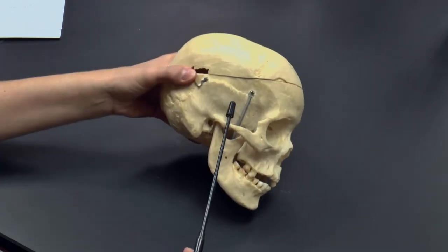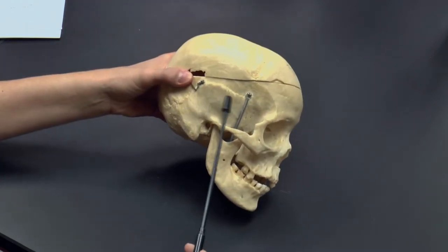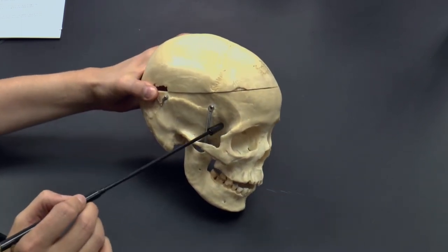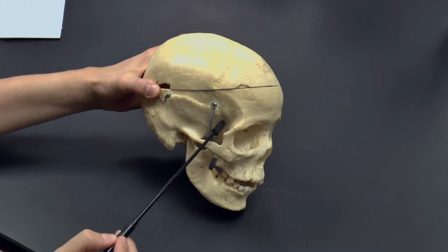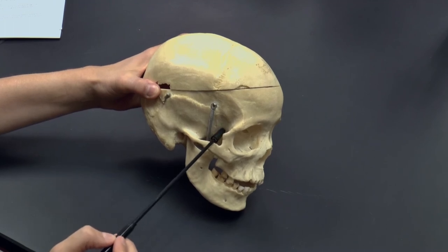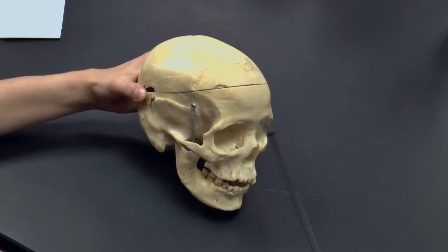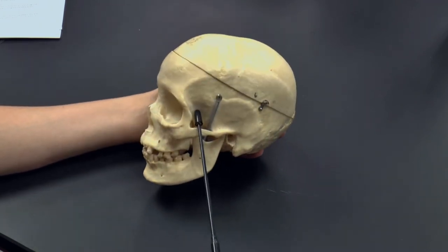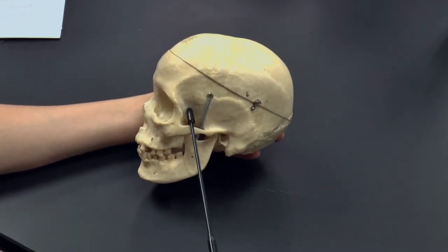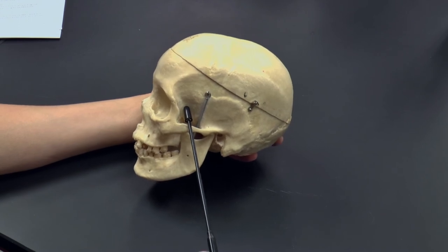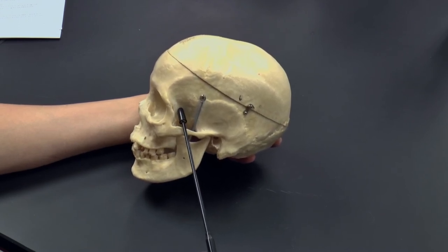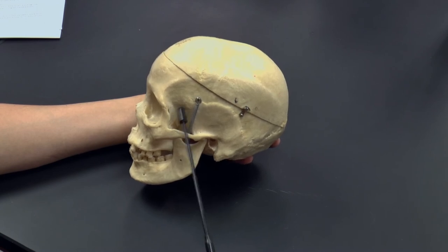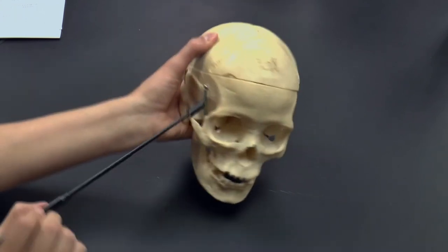Also from the lateral view, here we have the temporal bone, but sitting right underneath this arch is the sphenoid bone. It's a bone that crosses over the midline, so you can see the same single sphenoid bone on the other side as well. We'll see it also from the internal view, from the orbit of the eye, and from the other side.